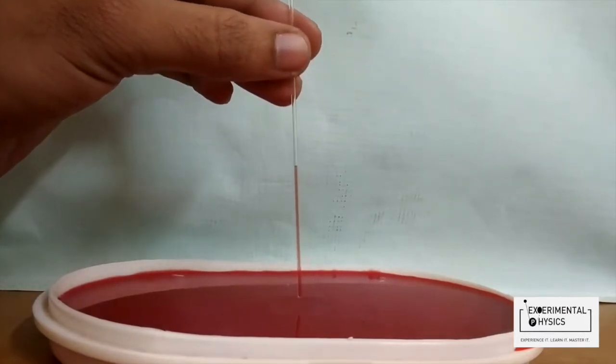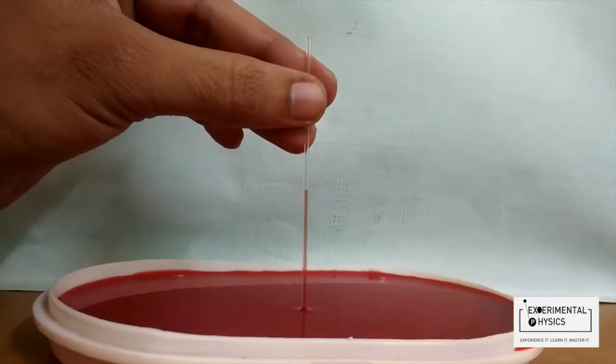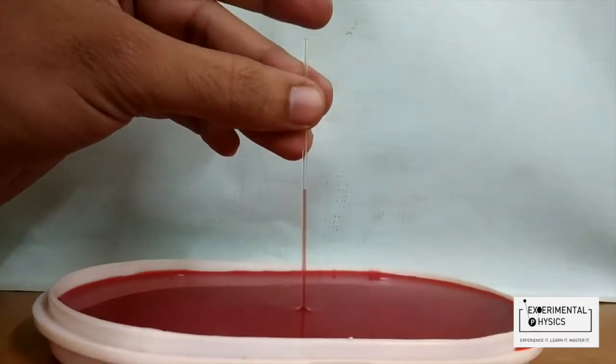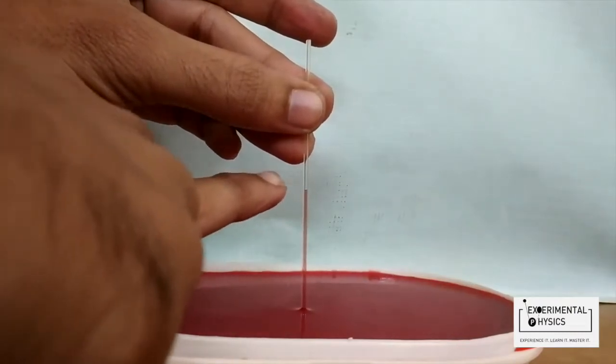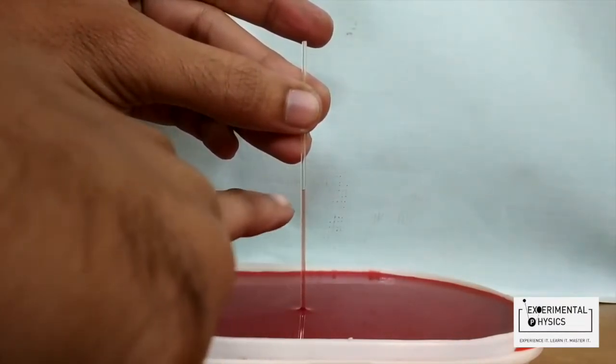When I take it out, the water will go down, and when I again place it, it goes up. So what matters is this height. This height must be the same from the water surface to the water column.